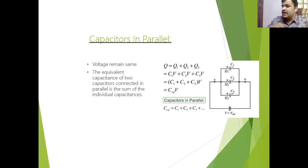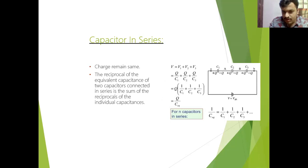Now coming to the parallel case. The parallel case of capacitors is opposite to the parallel case of resistors. Here, C equivalent is C1 plus C2 plus C3. This equation you want to remember — that's it.